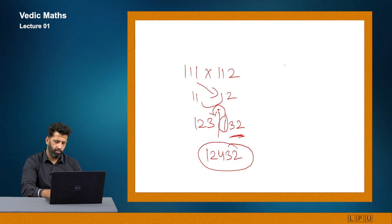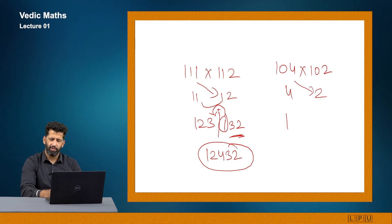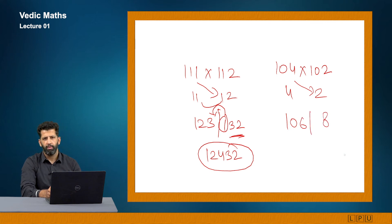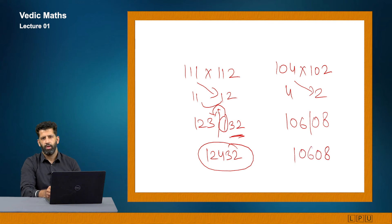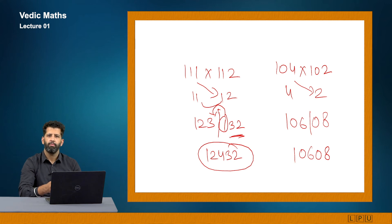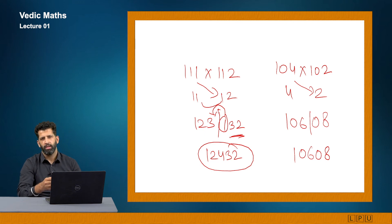If the right-hand side digits are fewer than 2, we prefix a zero. For example, 104 × 102: differences are 4 and 2. Left part: 104 plus 2 is 106. Right-hand side: 4 into 2 is 8. Since I need 2 digits, I prefix a 0, making it 08. So my answer is 10608.